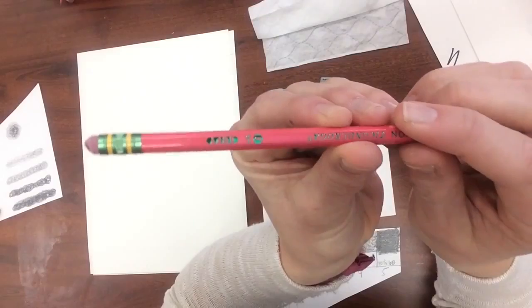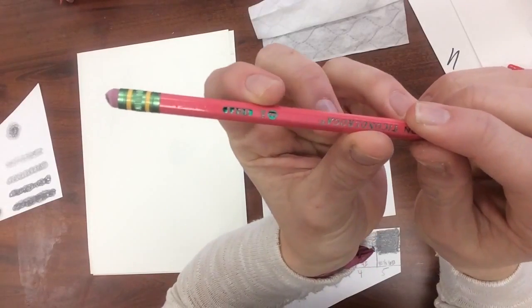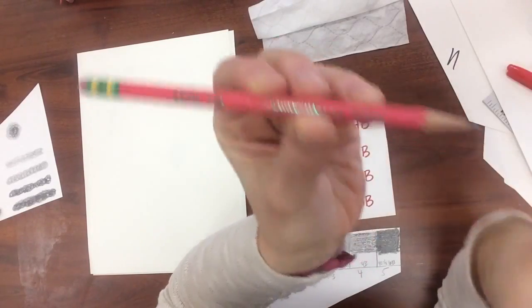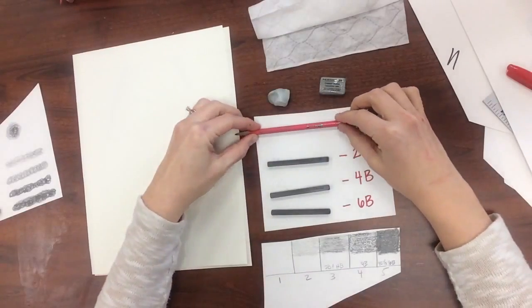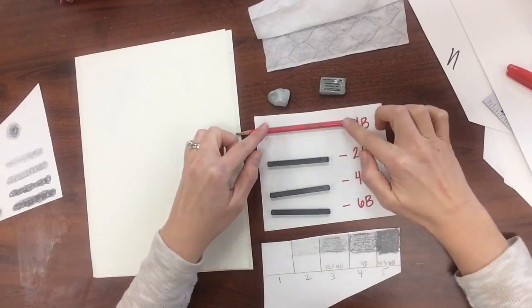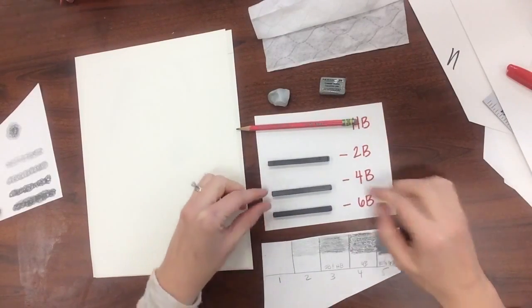Check out the pencil. You can see it says HB right here. This is the softest graphite. I'm sorry, the hardest graphite. 6B is the softest graphite.